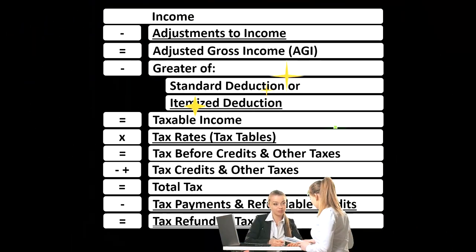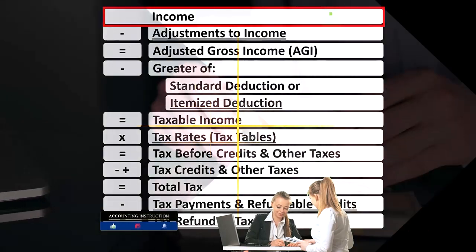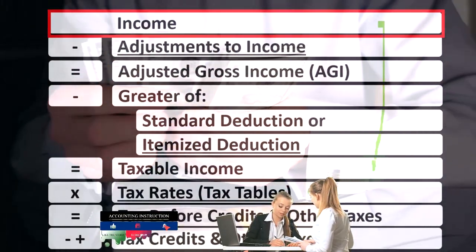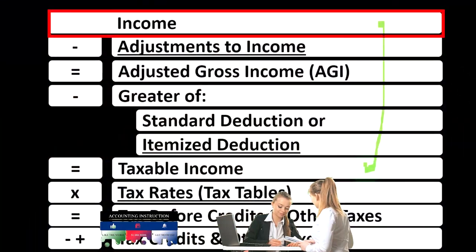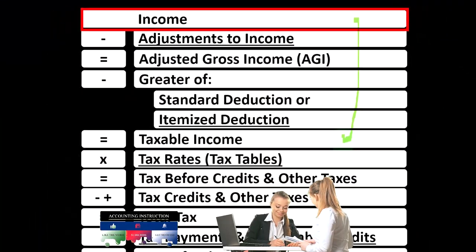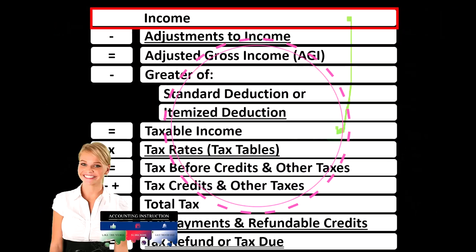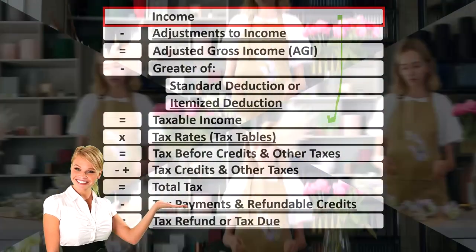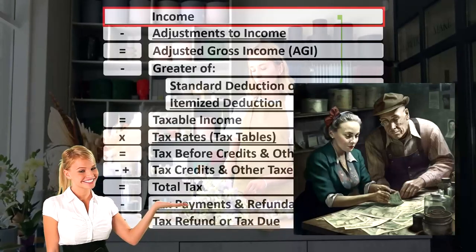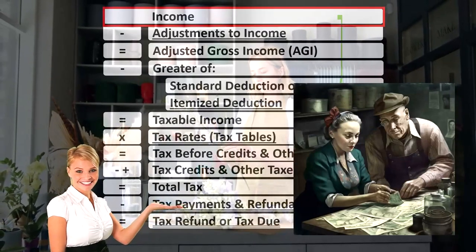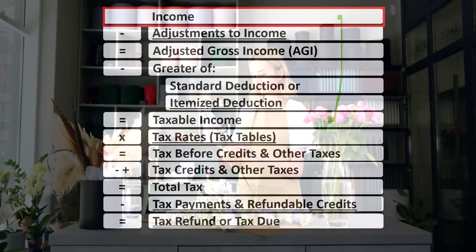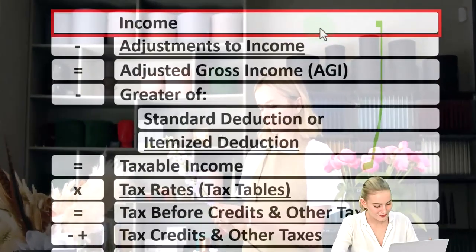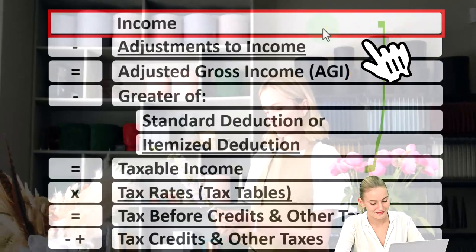Looking at the income tax formula, we're focused on line one income. The first half of the income tax formula is, in essence, an income statement — although it's just an outline and a scaffolding, with other forms and schedules flowing into it. For example, the Schedule C, the business income, which is in essence an income statement in and of itself: income minus expenses, with the net income flowing into the income line of the income tax formula.